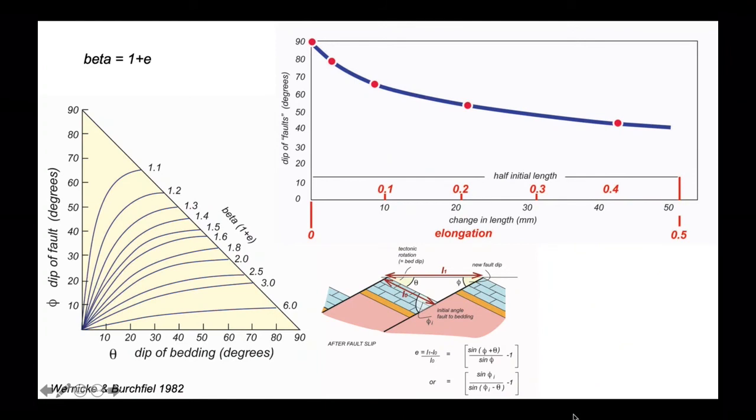Let's take our results and plot them on the graph of Wernicke and Birchfield. We've contoured it up for beta. Beta is one plus e. Our graph shows e. Our stretch factor finished when the value of stretching was 0.4 e, which is a beta of 1.4.